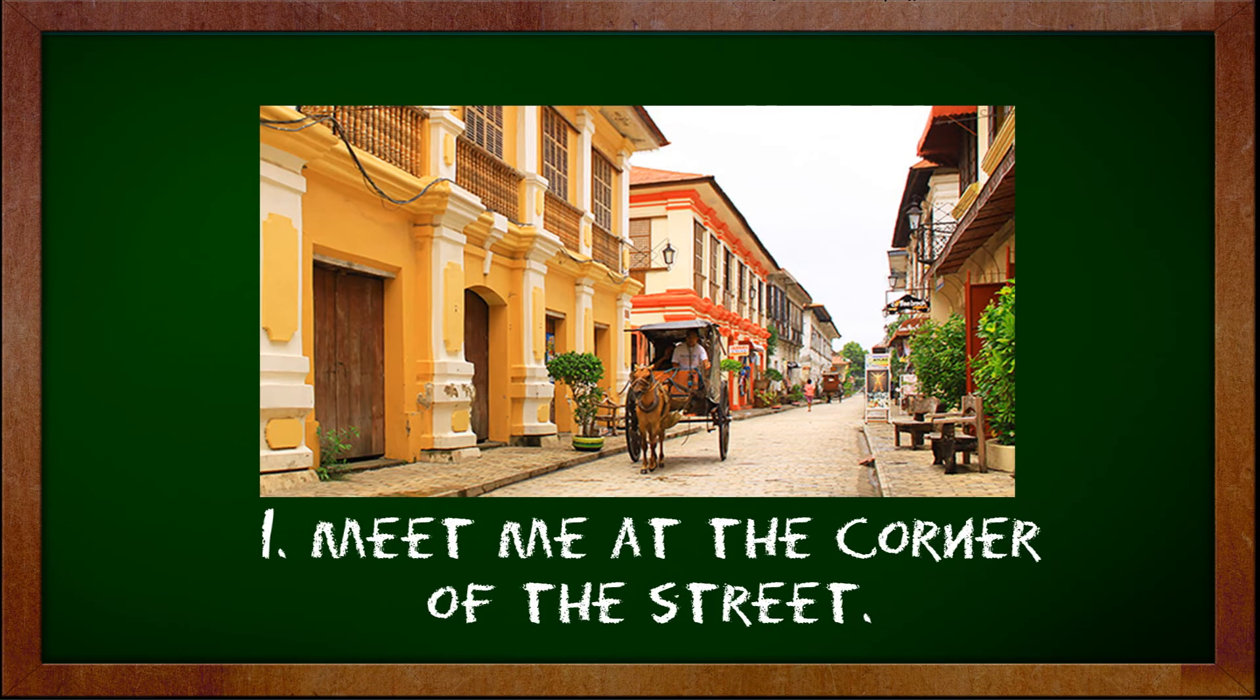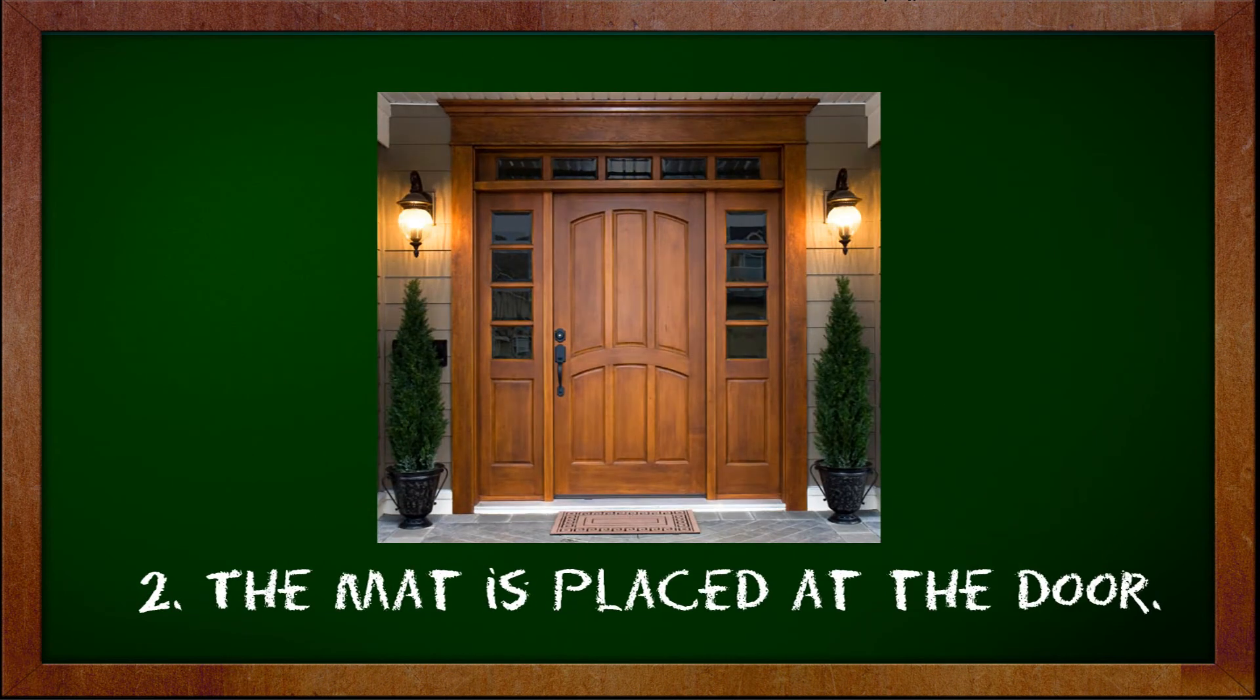Number one. Meet me at the corner of the street. Here, the corner of the street is a particular point so we use the preposition at. Number two. The mat is placed at the door. The mat is placed in a particular point of the house which is at the door.